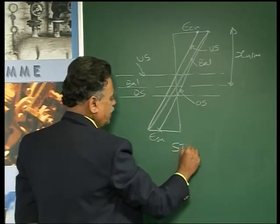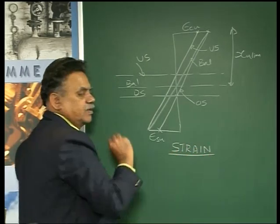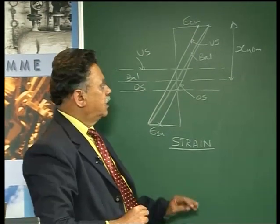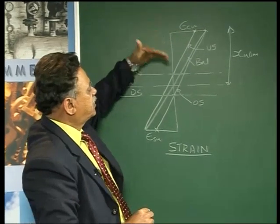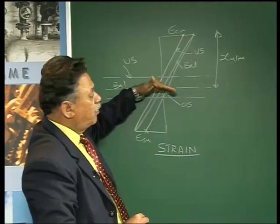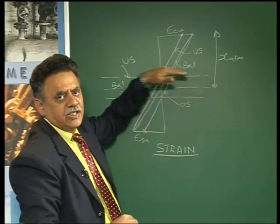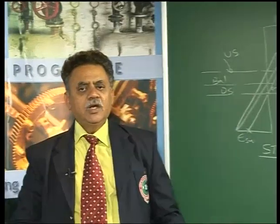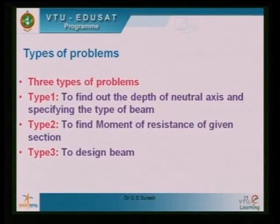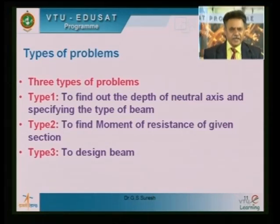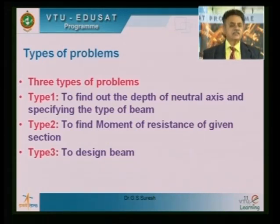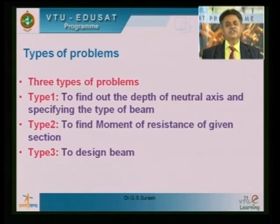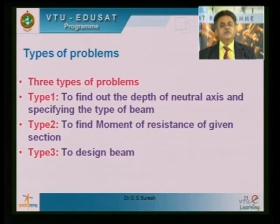Therefore, I can say the under reinforced section is much safer than the over reinforced section. To have a balanced section practically is impossible — only theoretically we can make one. To analyze a singly reinforced beam I can have three types of problems: Type 1 — find the neutral axis depth and specify the type of beam; Type 2 — find the moment of resistance of the given section; Type 3 — design the beam.